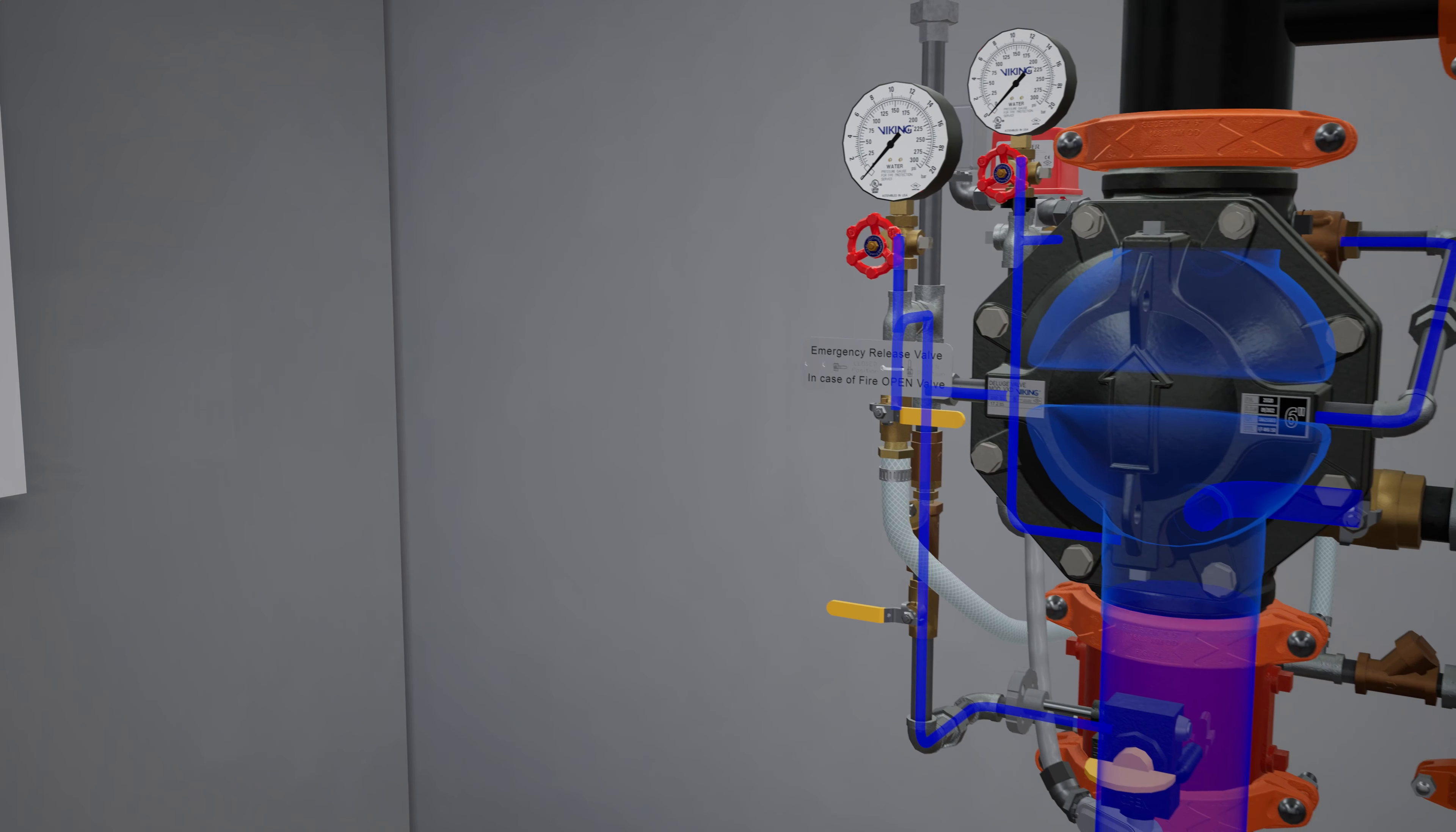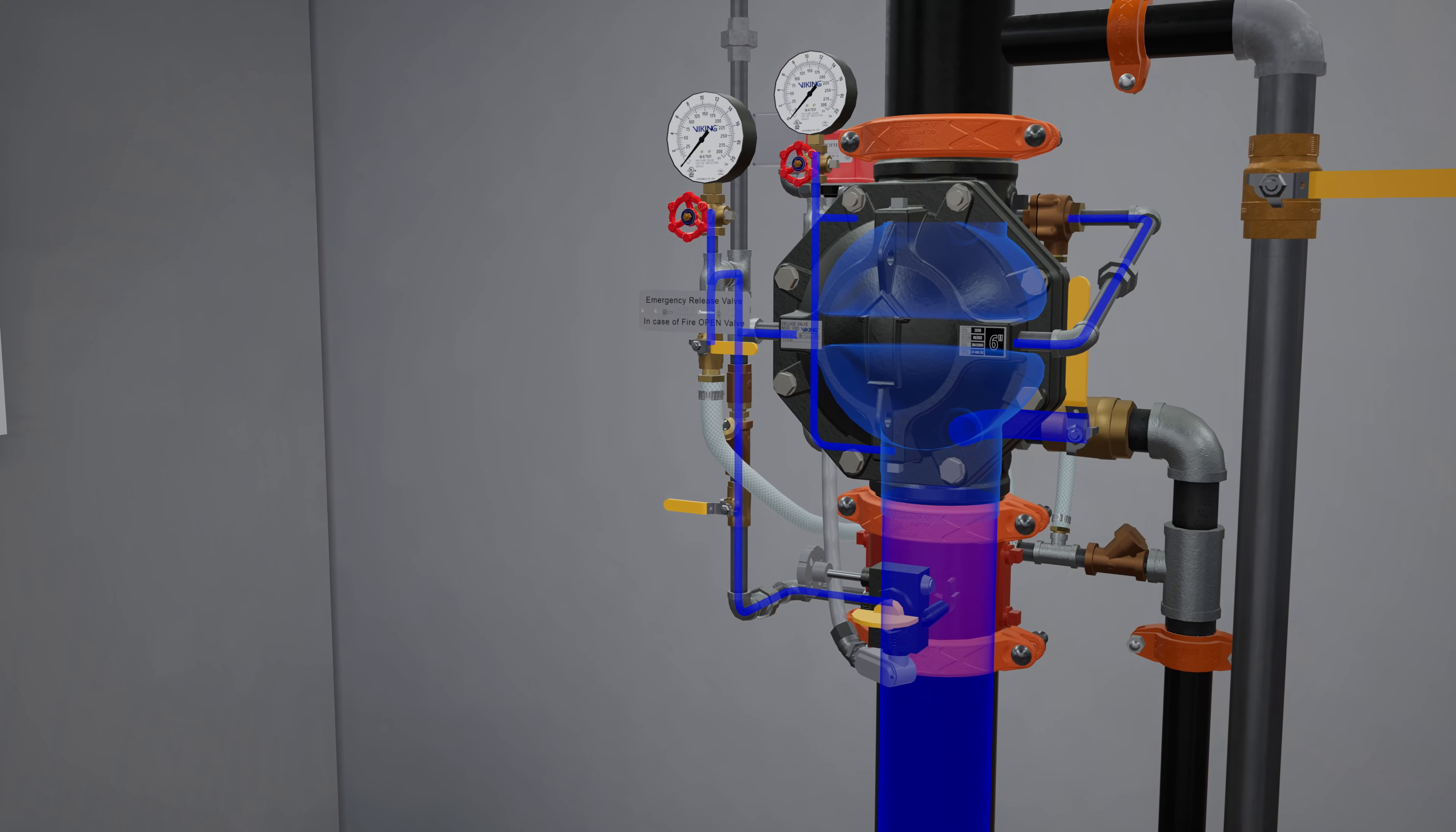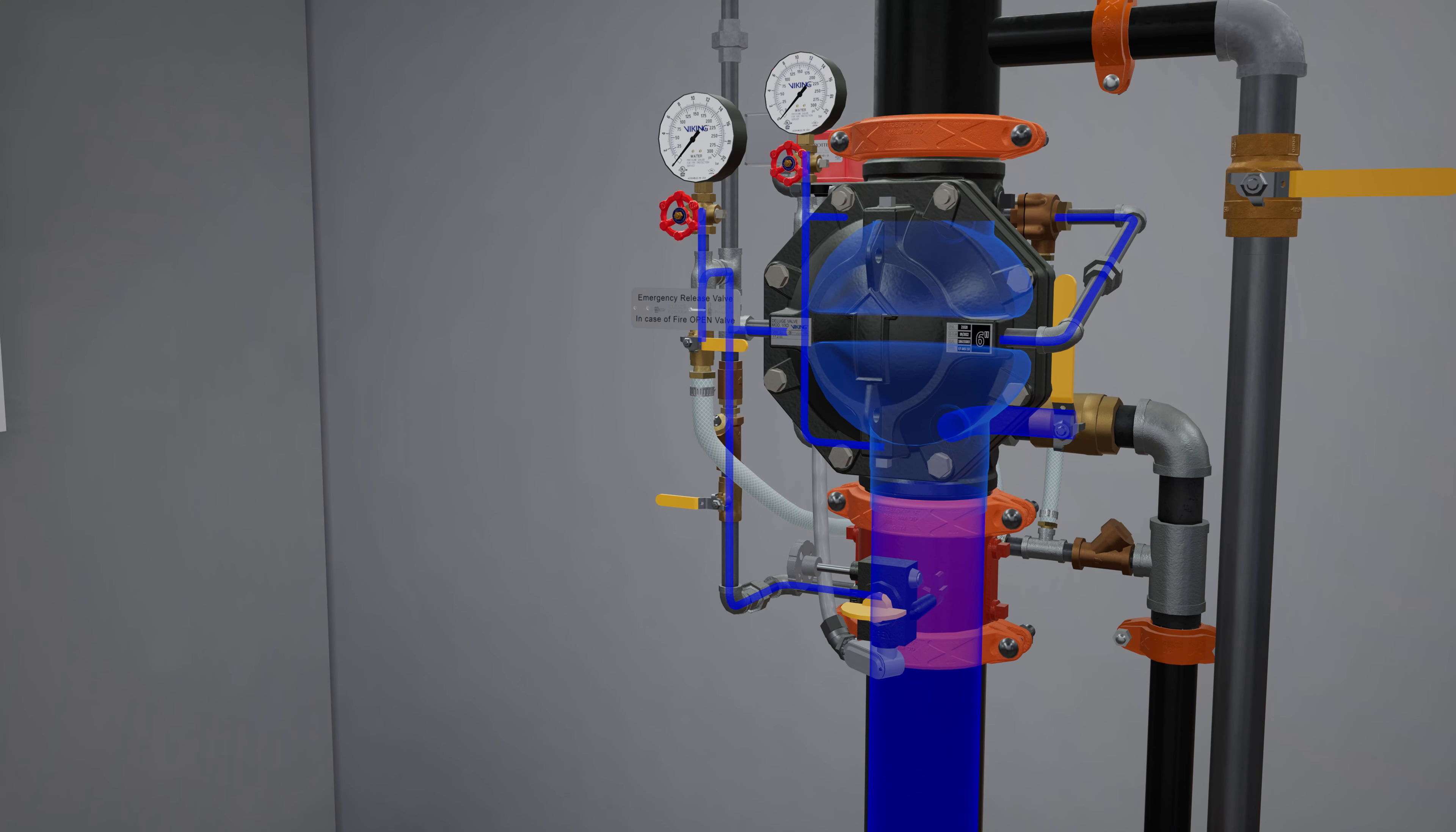Once water has been drained out of the system, you can start rebuilding the water pressure in the pilot line. Open the priming valve.